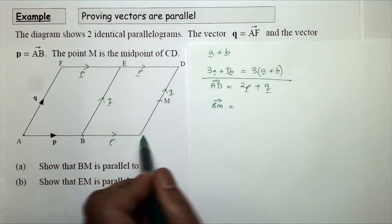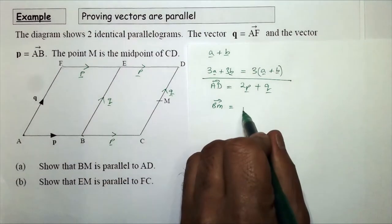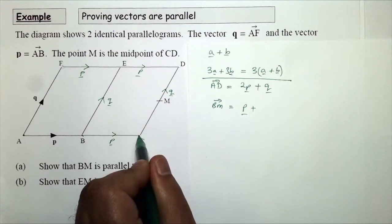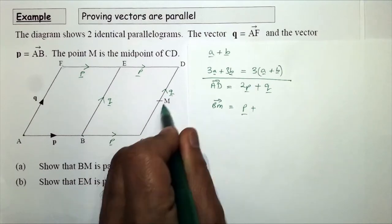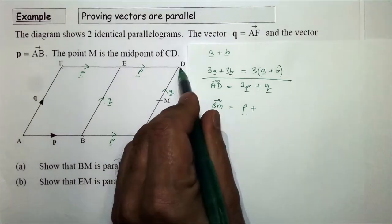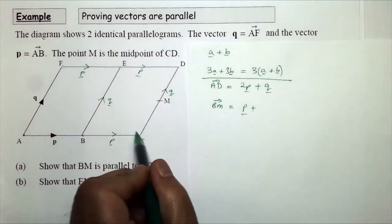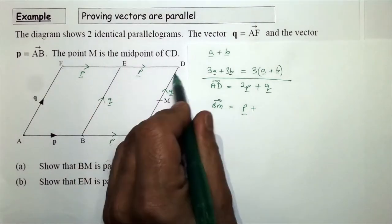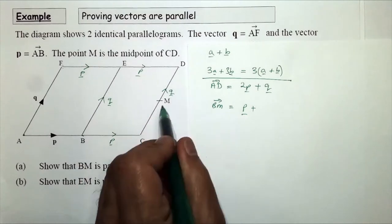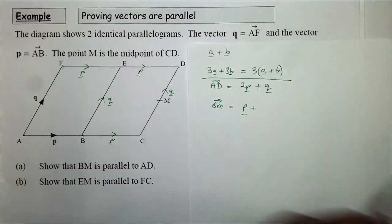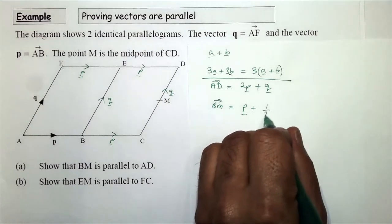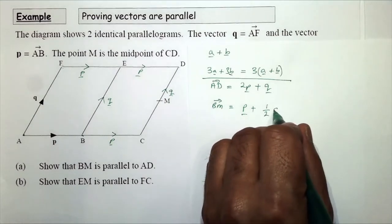Now for BM: BM equals B to M. I'm going to go from B to C first — that's vector p. Then from C to M. Since M is the midpoint, it will be half of CD. CD is equal to vector q, so CM is equal to one half of q.